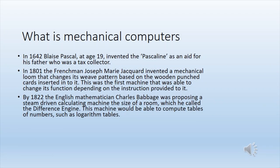In 1642, Blaise Pascal, at age 19, invented the Pascaline as an aide for his father, who was a tax collector. In 1801, the Frenchman Joseph Marie Jacquard invented a mechanical loom that changes its weave pattern based on wooden punched cards inserted into it. This was the first machine able to change its function depending on the instruction provided to it.